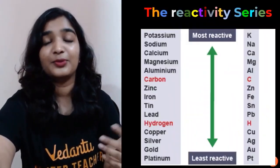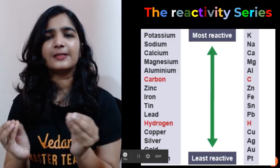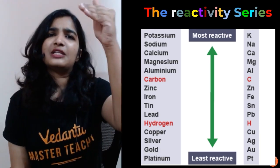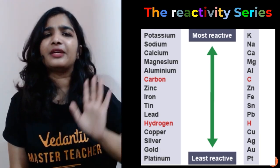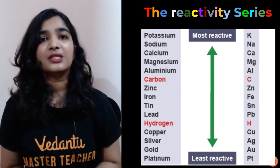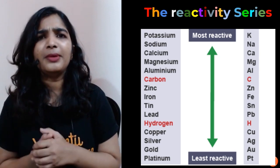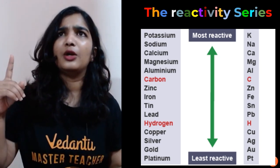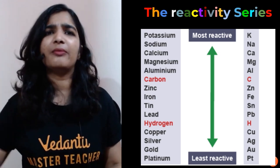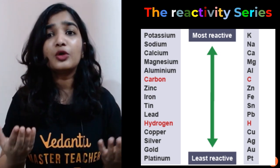So, what is the reactivity series? Metals have been arranged according to their decreasing reactivity — potassium is the most reactive while platinum is the least reactive. This is very different from the periodic table order, which goes hydrogen, helium, lithium, beryllium, boron — we somehow manage to learn that with mnemonics.